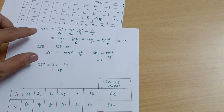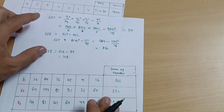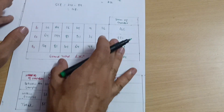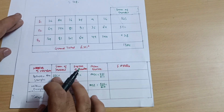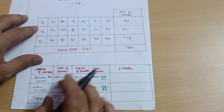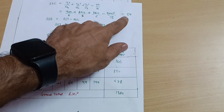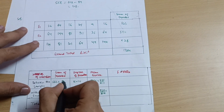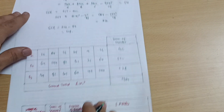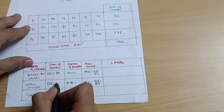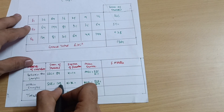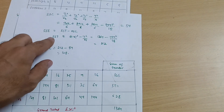Now we can calculate the sum of squares within the samples: SSE = SST − SSC = 212 − 84 = 128. So SSE = 128. All calculations are done. Now put these values into the ANOVA table. SSC = 84, SSE = 128, SST = 212.